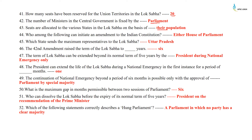Who can initiate an amendment to the Indian Constitution? Either house of the Parliament. Which state sends the maximum representatives to the Lok Sabha? It is Uttar Pradesh. The 42nd Amendment raised the term of the Lok Sabha to six years. The term of Lok Sabha can be extended beyond its normal term of five years by the President during national emergency only. The President can extend the life of the Lok Sabha during a national emergency in the first instance for a period of one month. The continuation of national emergency beyond a period of six months is possible only with the approval of Parliament by special majority.